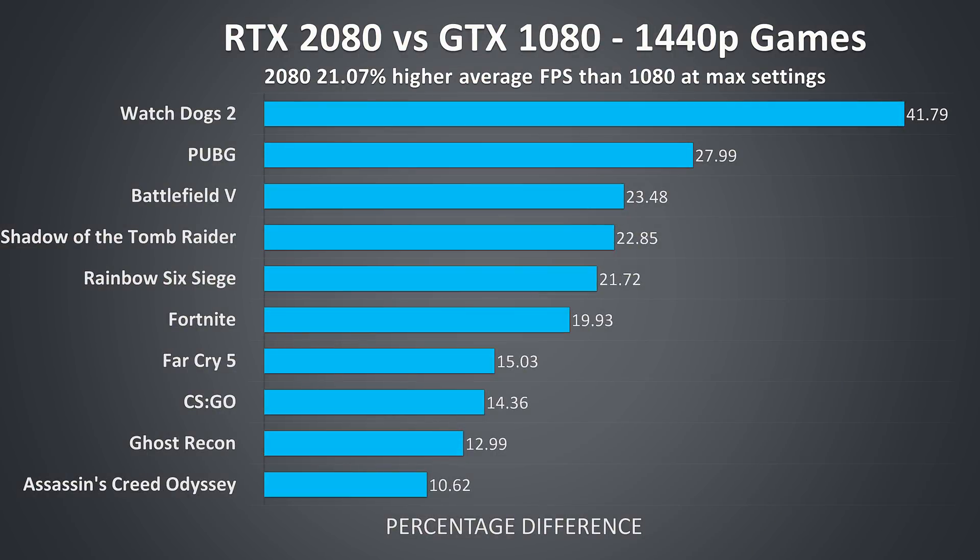At 1440p, on average over the same 10 games the RTX 2080 was now performing 21% better than the GTX 1080 in terms of average FPS, again at the highest setting presets as these tend to be more GPU demanding. There's quite a decent performance improvement at 1440p compared to 1080p, as higher resolutions tend to be less CPU bound and the differences between the graphics start to become more clear.